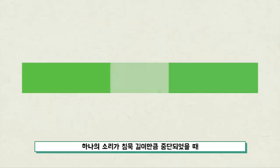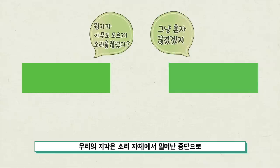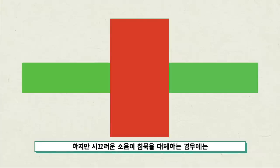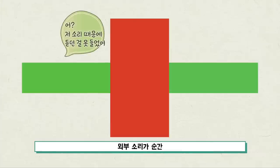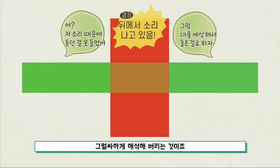하나의 소리가 침묵 길이만큼 중단되었을 때 이는 외부 요인에 의한 것일 가능성이 낮기 때문에 우리의 지각은 소리 자체에서 일어난 중단으로 합리적 추측을 하게 됩니다. 하지만 시끄러운 소음이 침묵을 대체하는 경우에는 외부 소리가 순간 원래의 소리를 방해한 것으로 듣게 됩니다. 큰 소음 뒤에서 소리가 이어지고 있겠거니 하고 그럴싸하게 해석해버리는 것이죠.